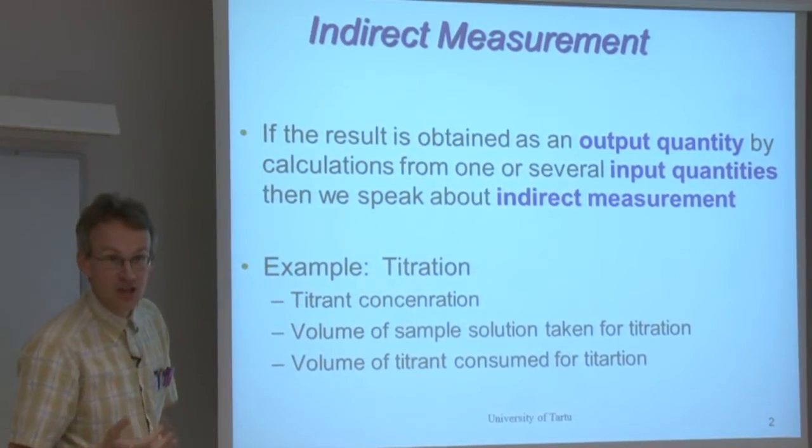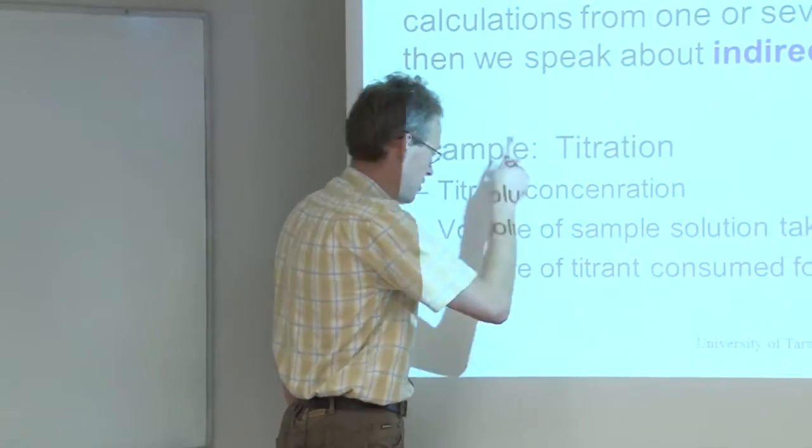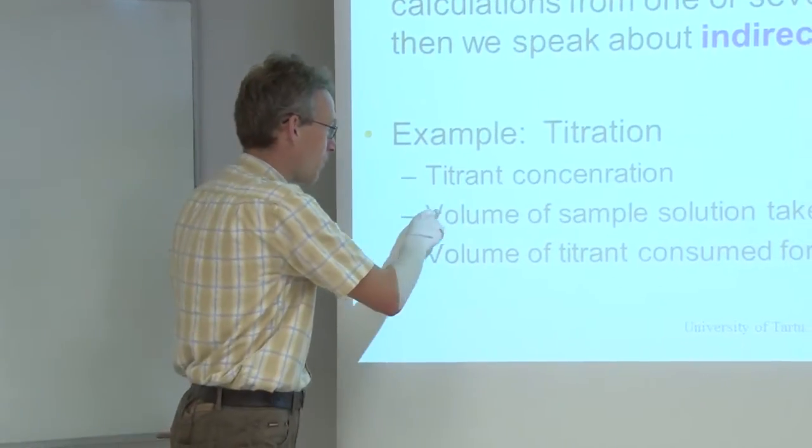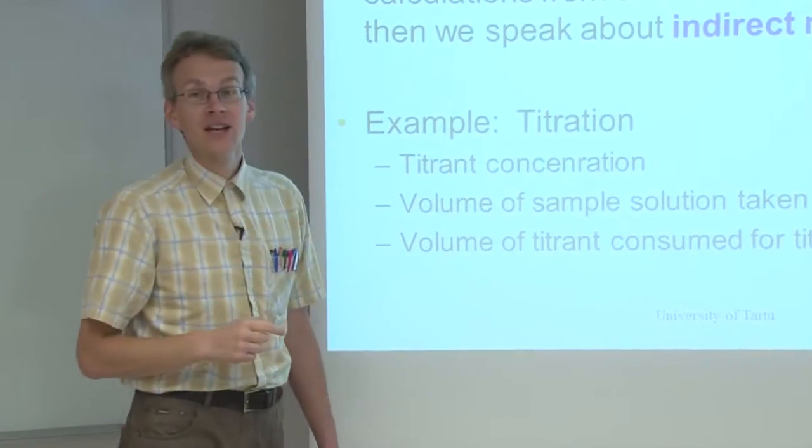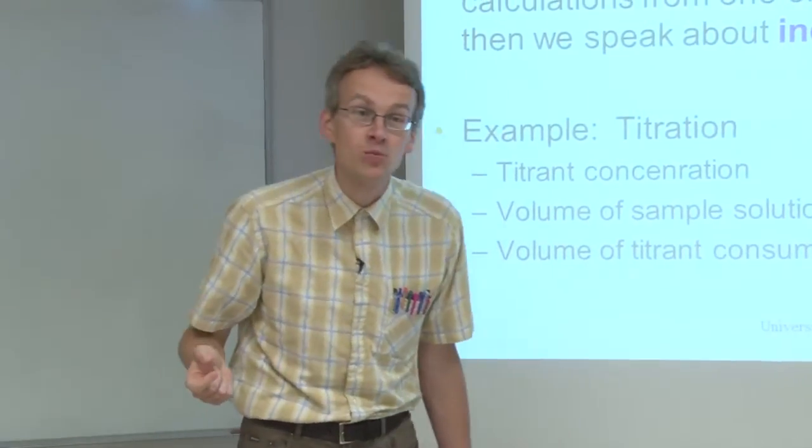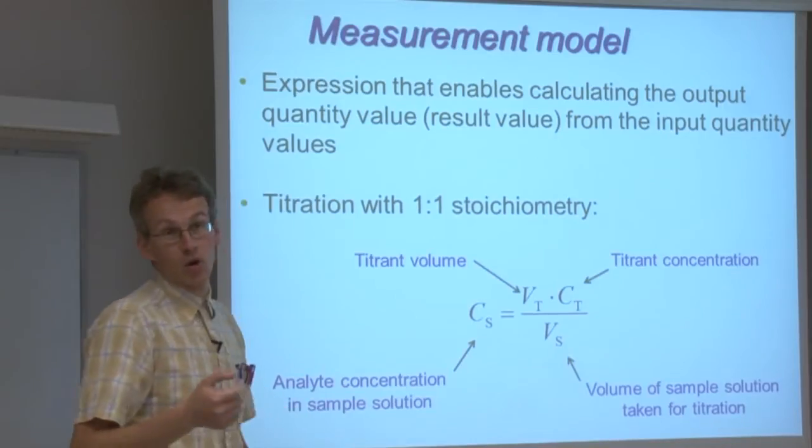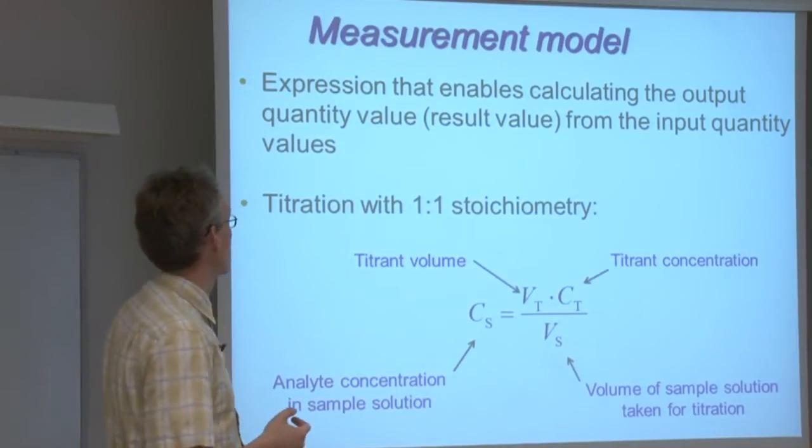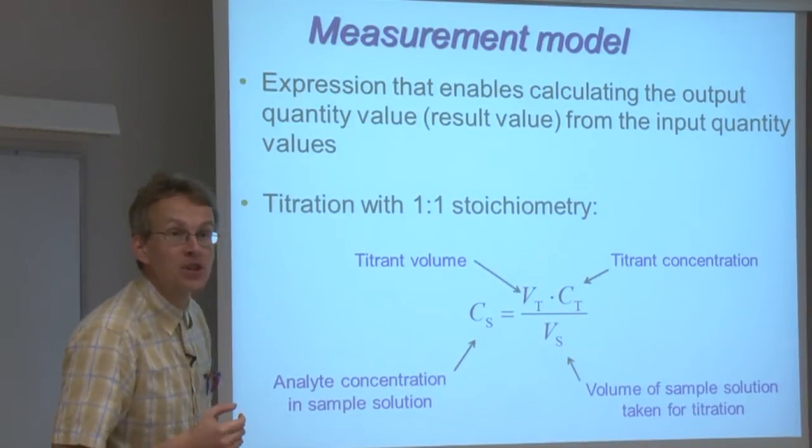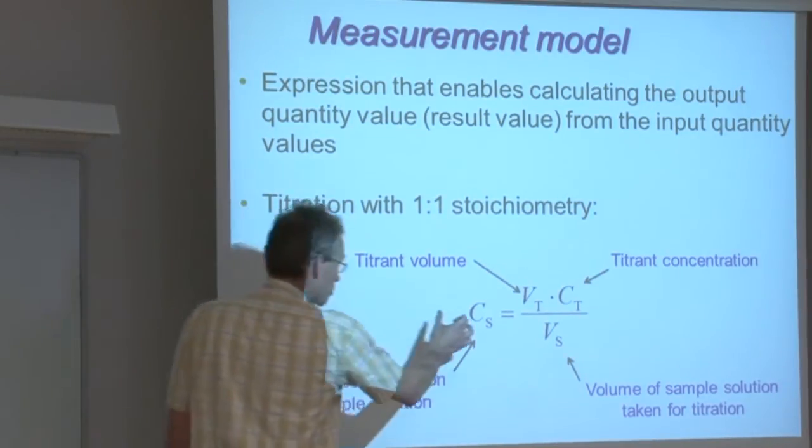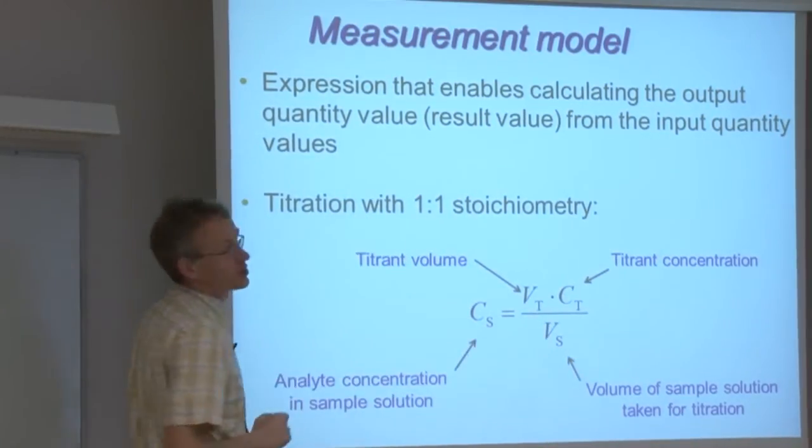And a good example is titration. When we do titration, we need to know titrant concentration, we need to know the volume of our sample solution that we took for titration, and we also need to know the volume of titrant that was consumed for this titration. And then we can calculate the concentration of the analyte in our sample solution. And such equation which links together the output quantity with all the input quantities is called measurement model.